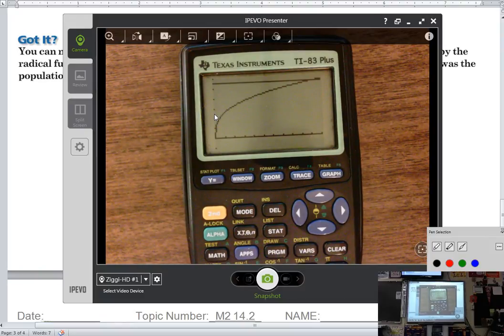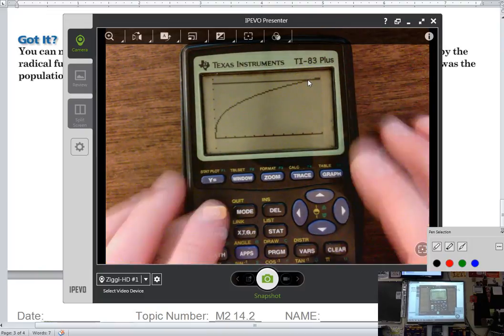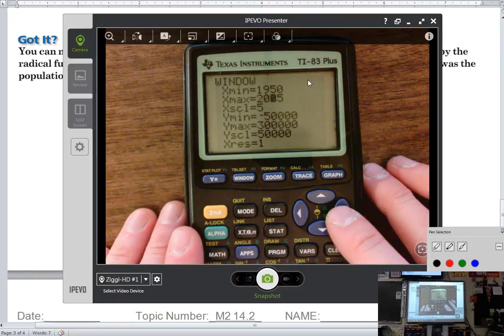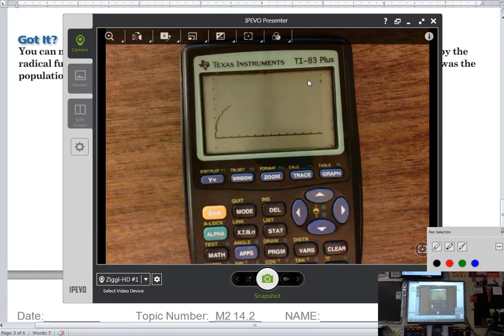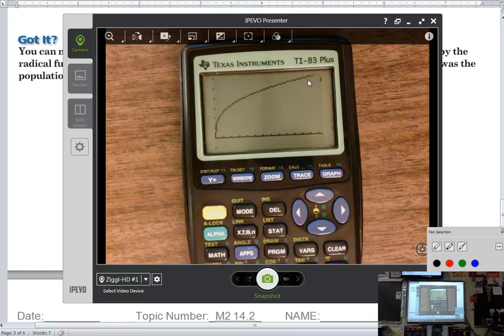Right here is where the data actually becomes accurate. So anything before that does not accurately show what was happening to the city population. This would not be a true representation of the population because it was not a population of zero in 1950, but the growth model that we're using wouldn't work to fit the data there. Then calculate your intersect. And if you need to make your window longer, go beyond year 2005.